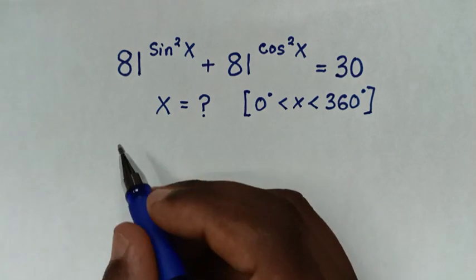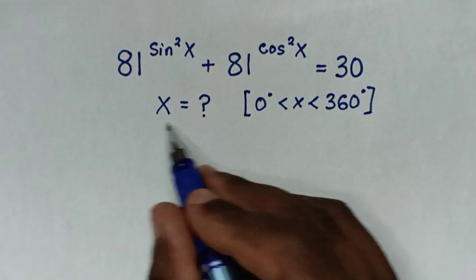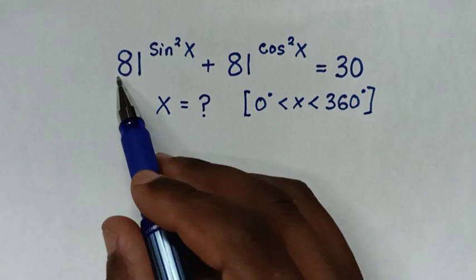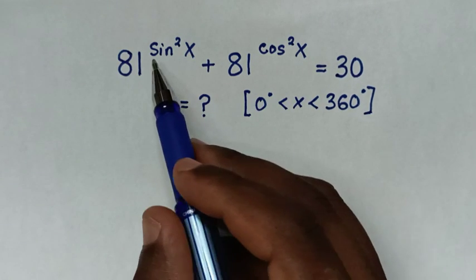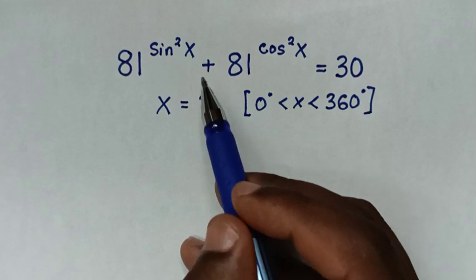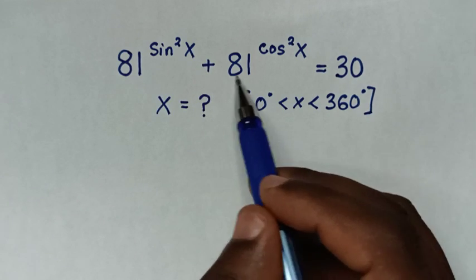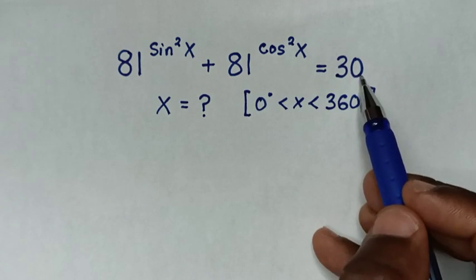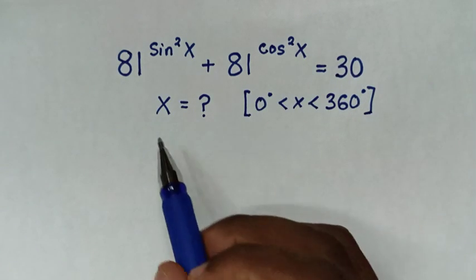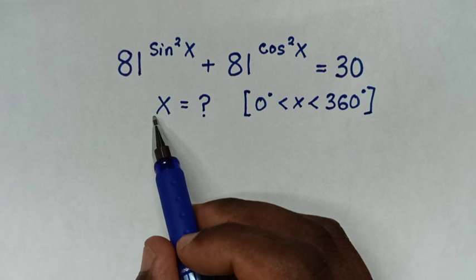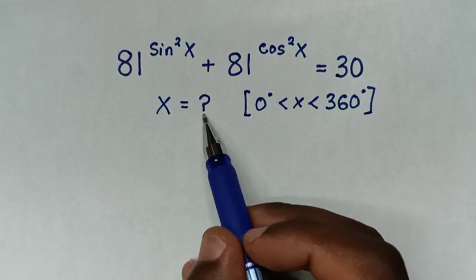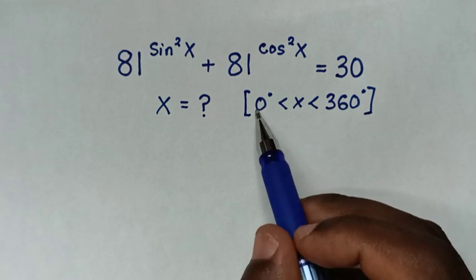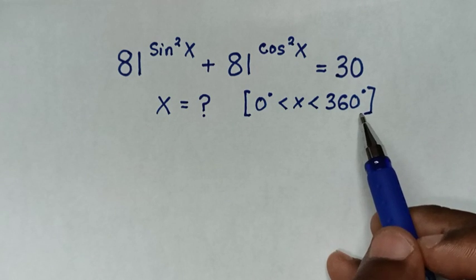Hello, you are welcome to solve this math problem, which is 81 to the power of sin²x plus 81 to the power of cos²x is equal to 30. We need to find the values of angle x such that x is between 0 and 360 degrees.